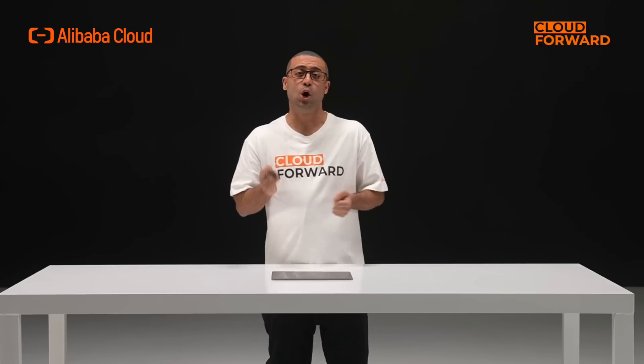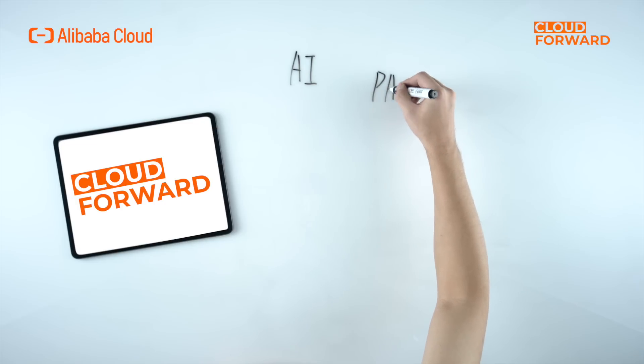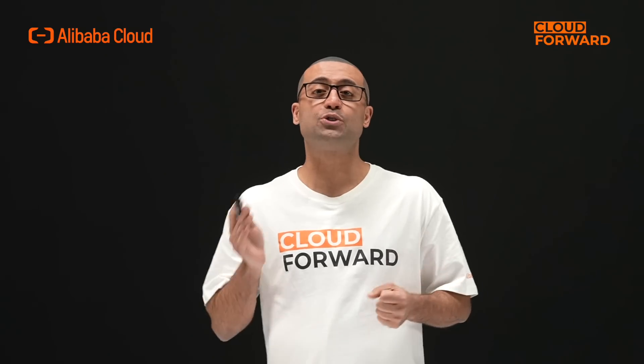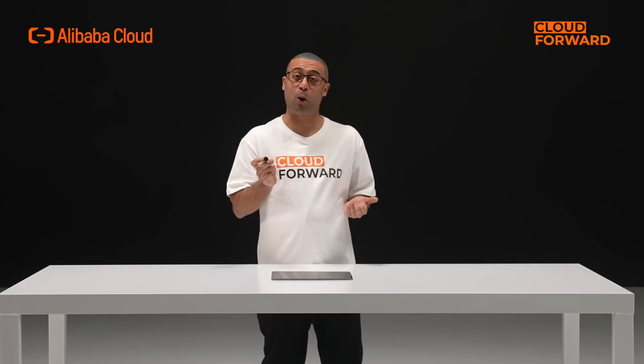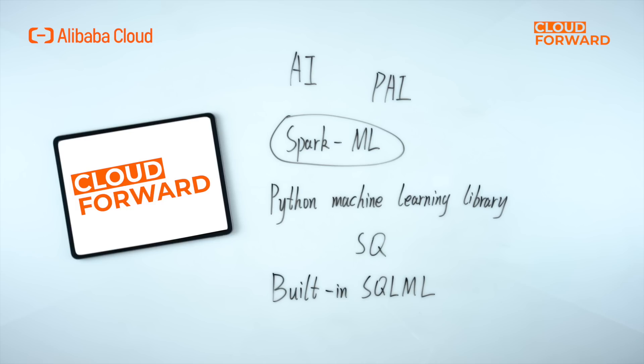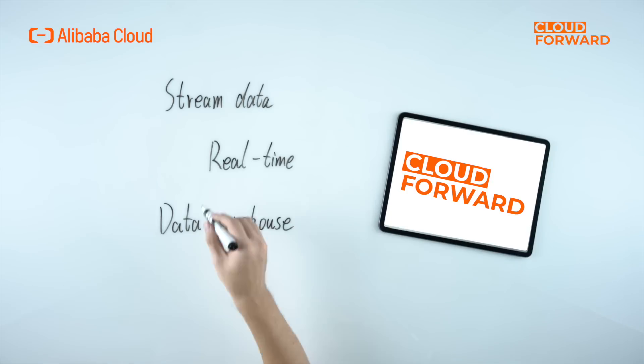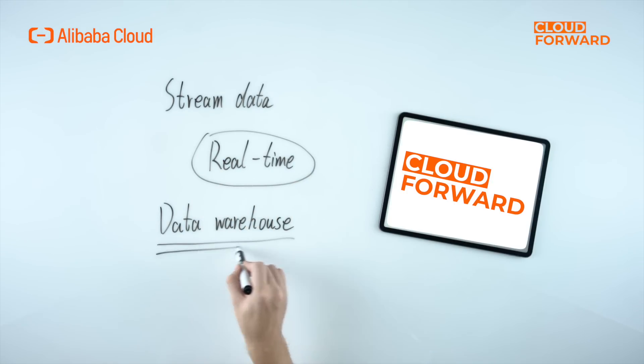MaxCompute supports data warehouse correlation analytics via the same set of data warehouse services and user interfaces. It also integrates AI capabilities, which can be seamlessly integrated with Alibaba Cloud machine learning platform PAI. It allows users to conduct intelligent analytics using the familiar Spark ML, supports third-party Python machine learning libraries, or machine learning via SQL with its built-in SQL ML. MaxCompute also supports stream data collection and analytics, real-time writing of stream data, and integration with major cloud messaging services for easy access to stream data from multiple sources.